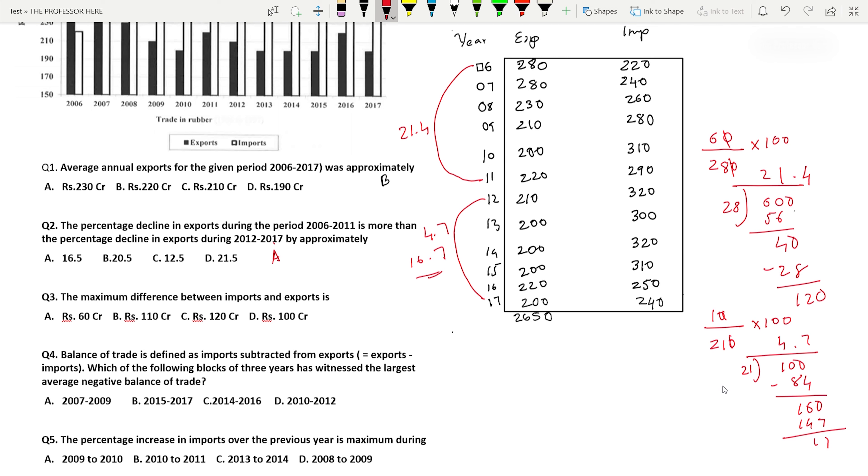Question number three: The maximum difference between imports and exports is. Look at the options and you can see 60, 110, 120. 120 is the highest in the options, so look for a difference up to 120 in the table. You get 60, 20, 30, 110, 110 again. Then you find 320 minus 200 is 120. So 120 is the maximum. Option C is the answer.